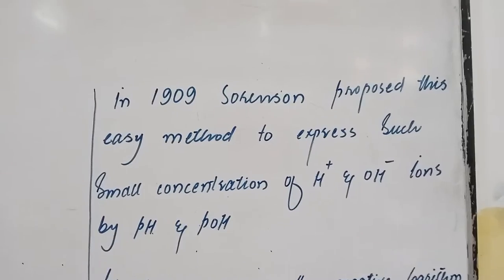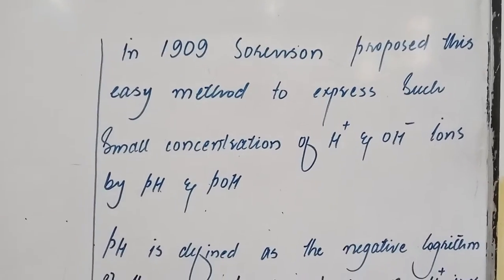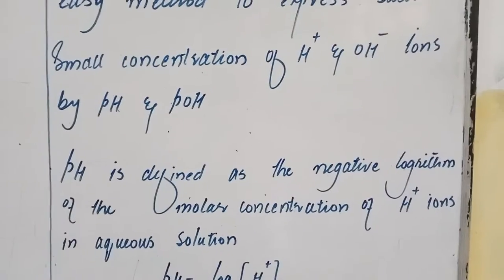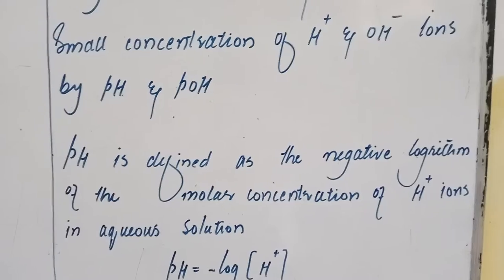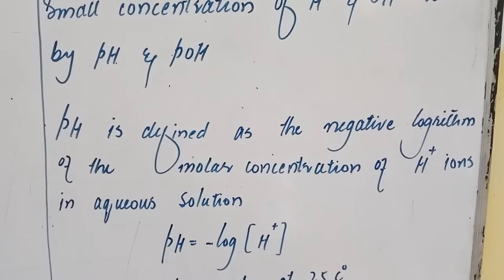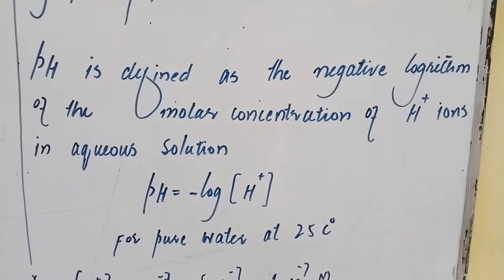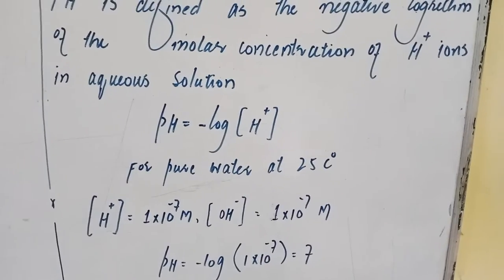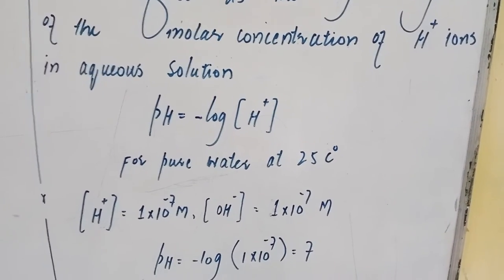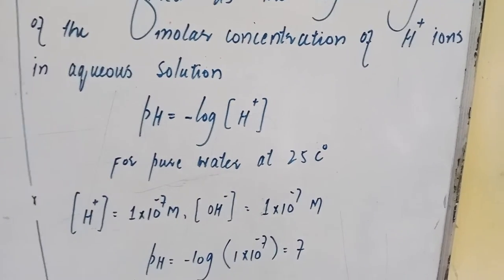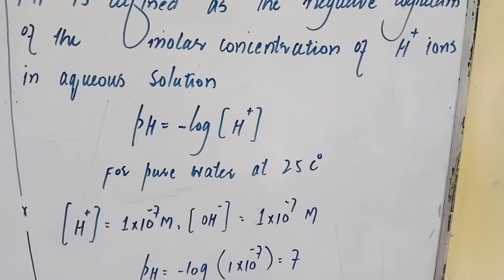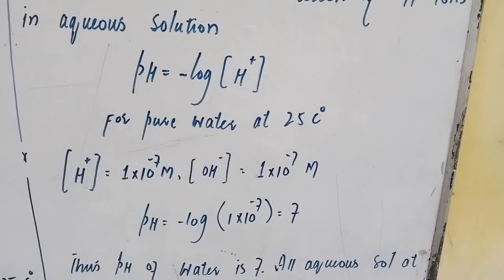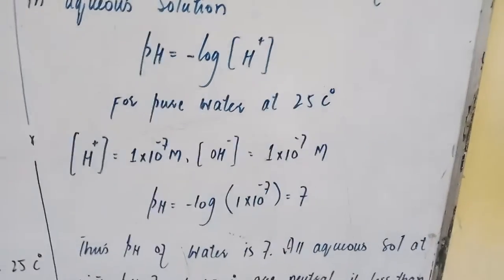In 1909, Sorensen proposed an easy method to express such small concentrations of hydrogen and hydroxyl ions using pH and pOH. The pH is defined as the negative logarithm of the molar concentration of hydrogen ions in aqueous solution: pH equals −log[H⁺]. For pure water at 25°C, [H⁺] equals 1 × 10⁻⁷ molar, so pH equals −log(1 × 10⁻⁷) equals 7.